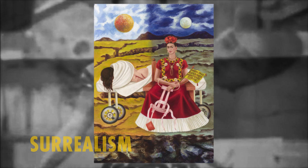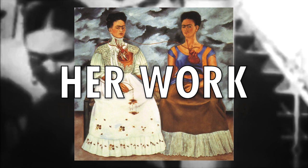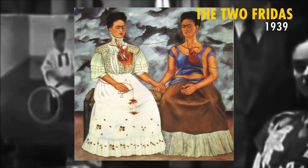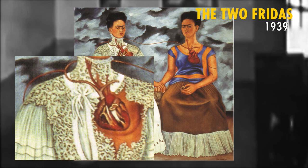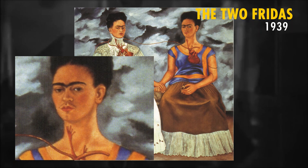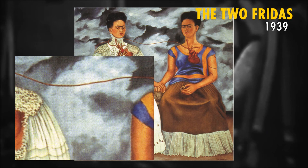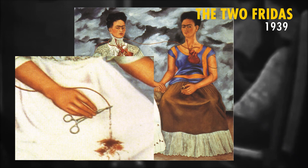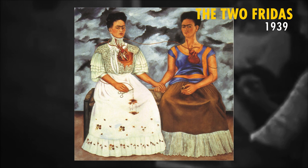Kahlo painted this work on her return to Mexico following her separation from Diego Rivera, with whom she had been living in Detroit. It depicts a split into two identities: Frida dressed in a white lace dress with European style embroidery, and Frida in a traditional Tejuana dress in reference to the dress that Diego loved. The hearts of both Fridas are exposed and connected to one another. The first has cut her artery with scissors, staining her white skirt, and the other holds a small portrait of Rivera. The clouds in the background imbue the scene with a sense of doom.